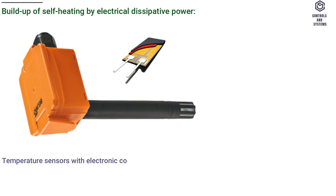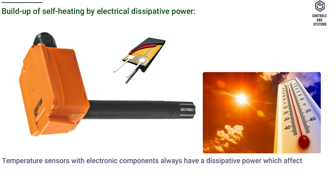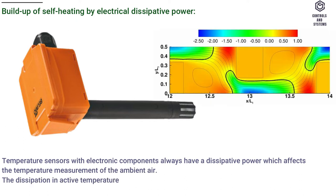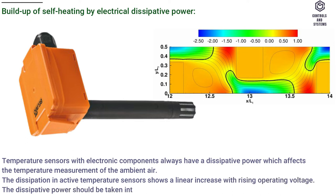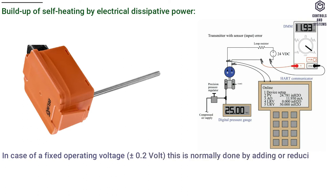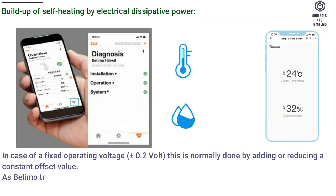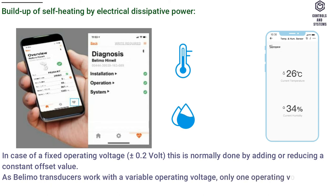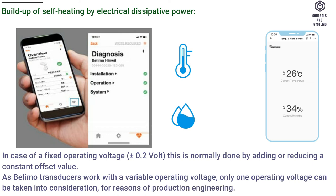Buildup of self-heating by electrical dissipative power: Temperature sensors with electronic components always have a dissipative power which affects the temperature measurement of the ambient air. The dissipation in active temperature sensors shows a linear increase with rising operating voltage. The dissipative power should be taken into account when measuring temperature. In case of a fixed operating voltage of ±0.2 volt, this is normally done by adding or reducing a constant offset value. As Belimo transducers work with a variable operating voltage, only one operating voltage can be taken into consideration for reasons of production engineering.